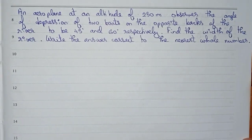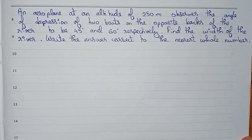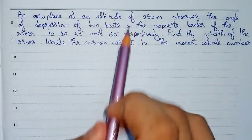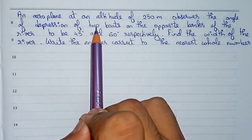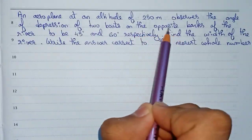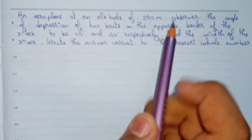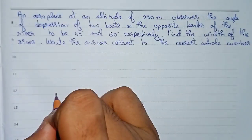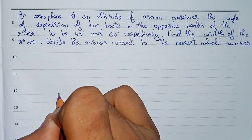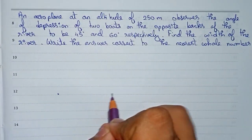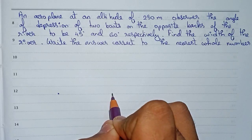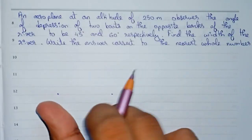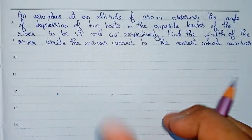So first we'll draw a diagram of this question. The question states that two boats are on the opposite banks of the river. So one boat is here and the other boat is here. These two points represent the two boats.